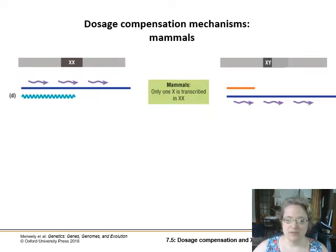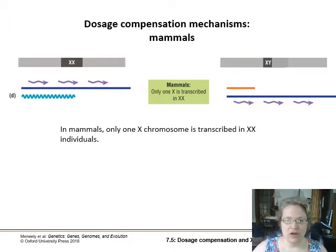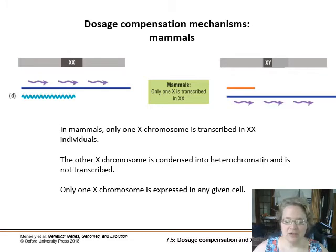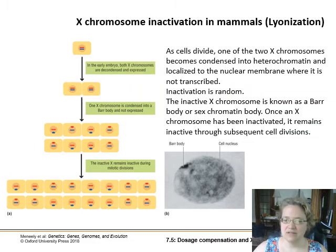That brings us to mammals, where in XY males there is transcription from the single X chromosome. In XX females, only one chromosome is transcribed — the other X chromosome is randomly targeted to be bundled up into heterochromatin and is not transcribed, forming a Barr body or a lyonized body. At any given time, only one X chromosome — either your maternal or your paternal — is expressed in any given cell. This is called X chromosome inactivation, or lyonization, named after Mary Lyon.